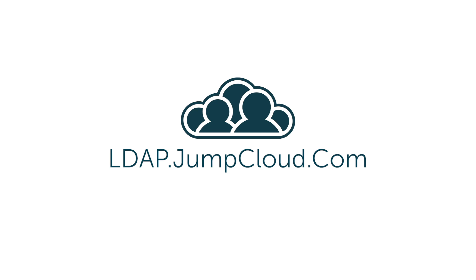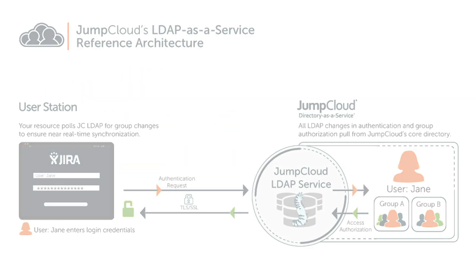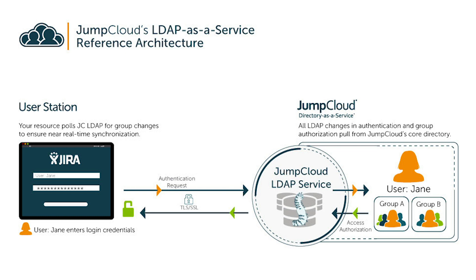JumpCloud's LDAP endpoint is found at ldap.jumpcloud.com. Your resources, ranging from applications on-premise or in the cloud, or other types of resources that can authenticate with LDAP, can utilize the 636 port, which is the SSL or most secure method. We also offer our 389 port, which we recommend using StartTLS on.